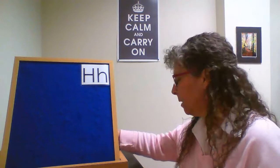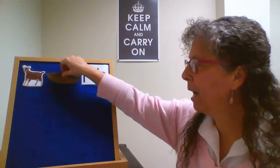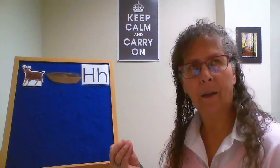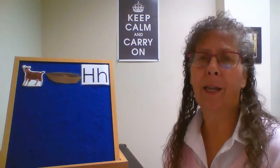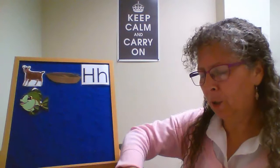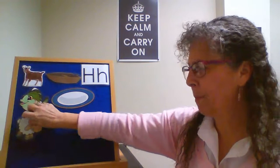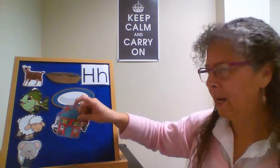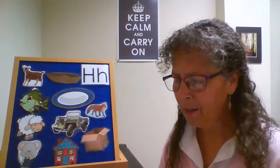For the flannel board, 'A-Hunting We Will Go' works great for letter H. You sing: 'A-hunting we will go, a-hunting we will go — we'll catch a...' and have the children say a rhyming word, like 'goat' and 'boat.' This gets them connecting rhyming words, which is a great skill-building activity for story time. You'll catch a fish and put him in a dish, catch a sheep and put him in a heap, catch a mouse and put him in a house, catch a fox and put him in a box.